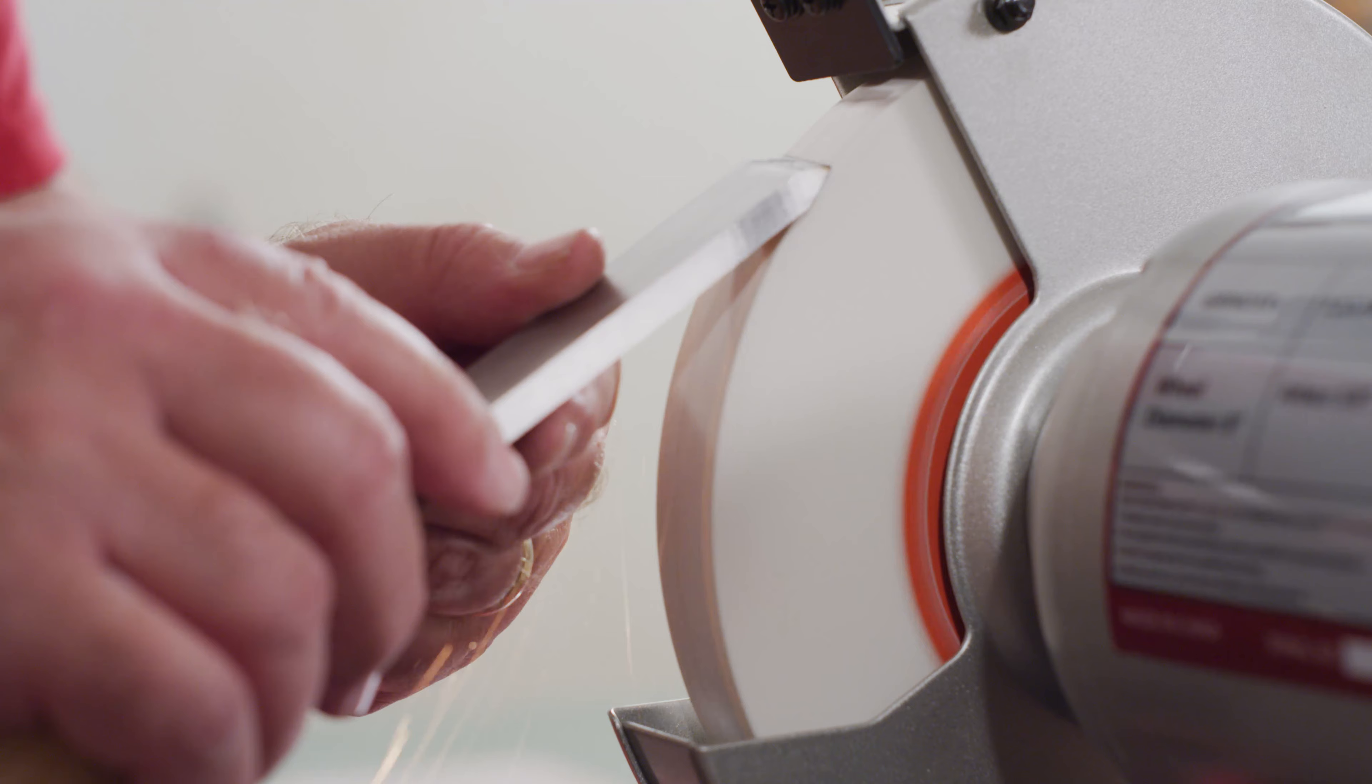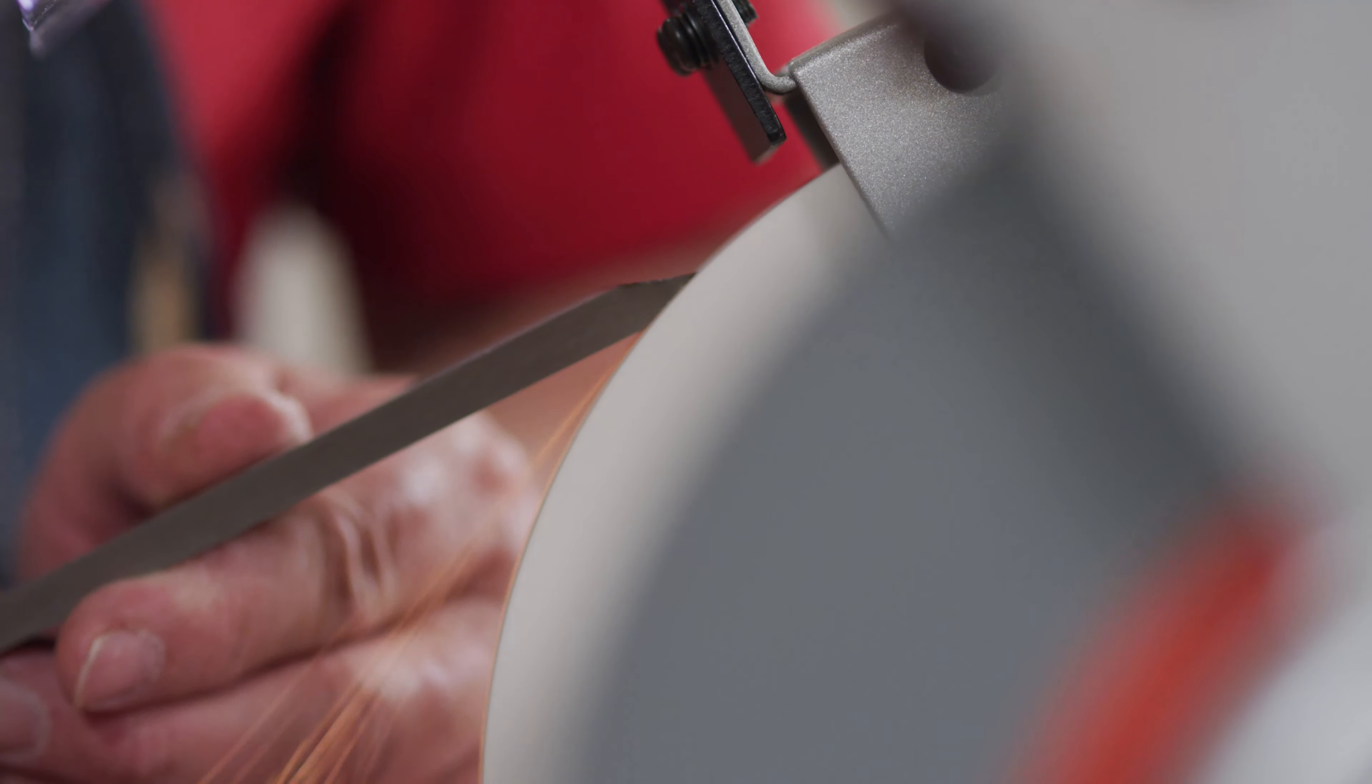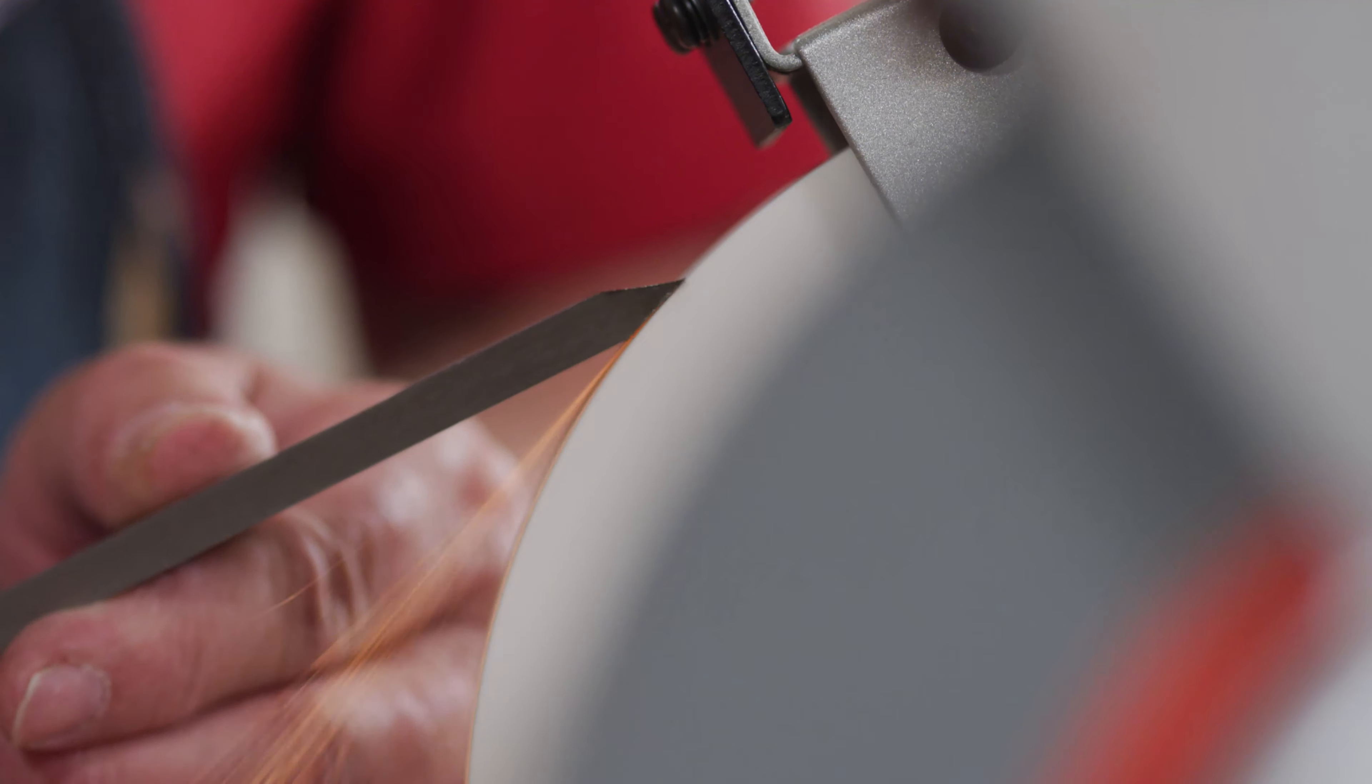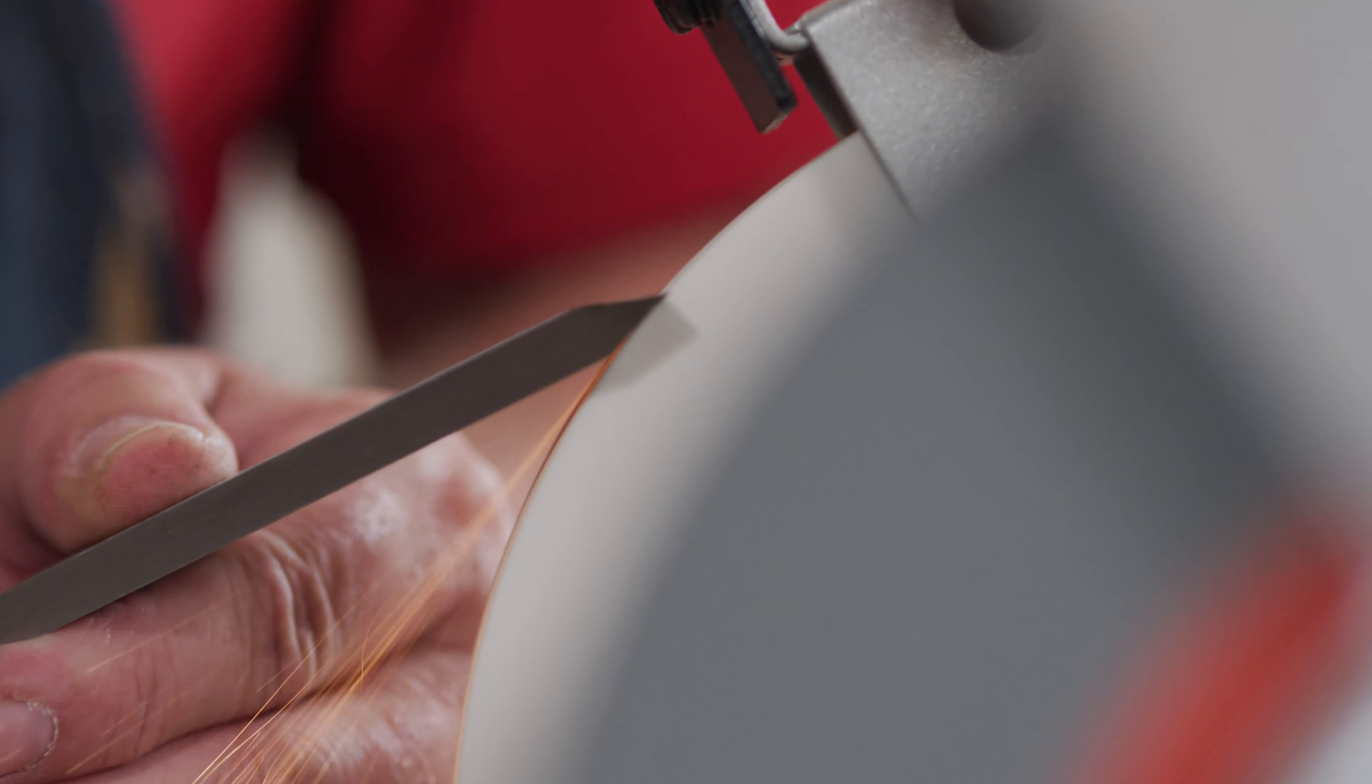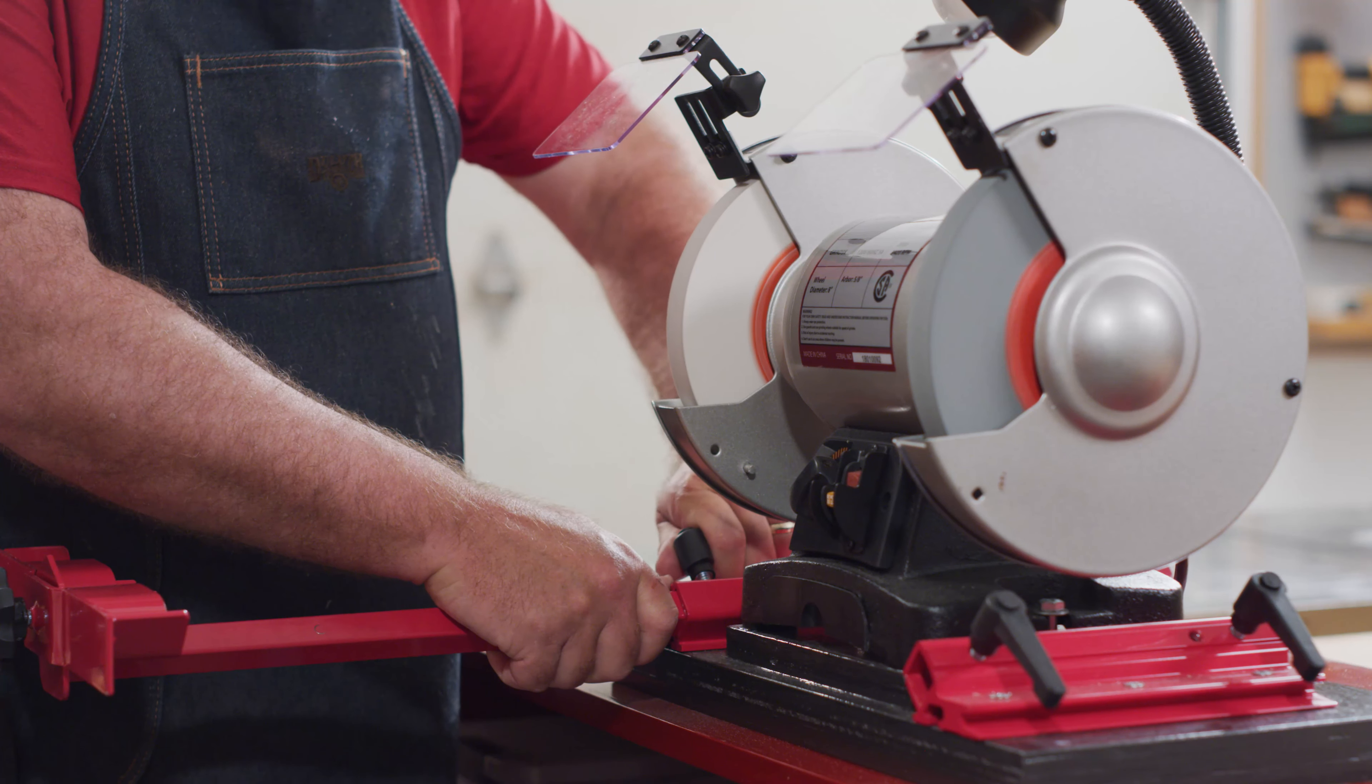Adjust the extension arm as necessary for a flush grind from heel to toe. The goal is to have the entire beveled edge perfectly flat against the grinding wheel. Once correctly positioned, lock the adjustment arm in place.